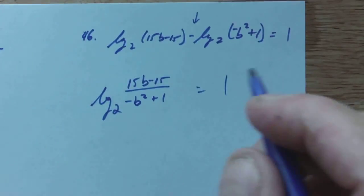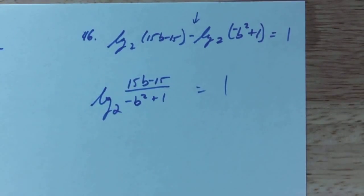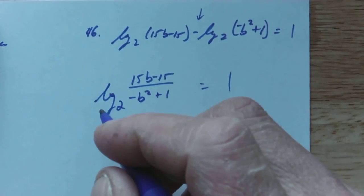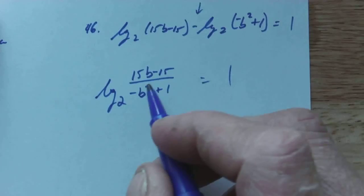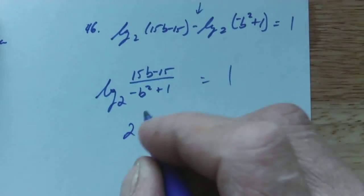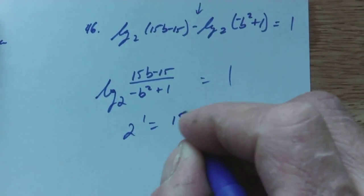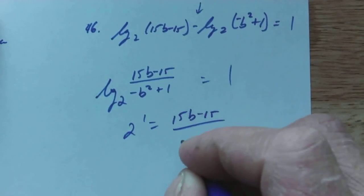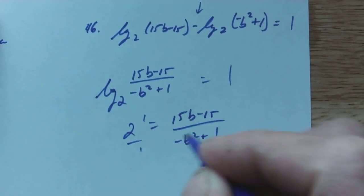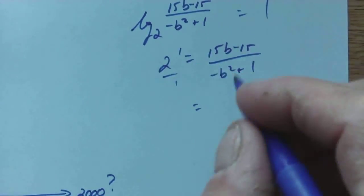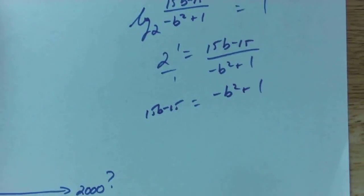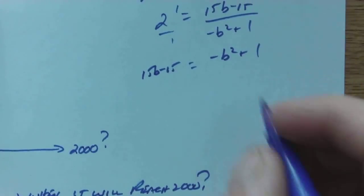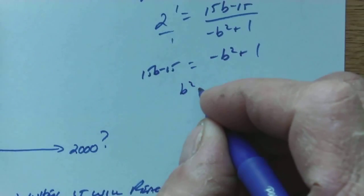So then what we're going to do is we're going to go ahead and say, I've got to shift gears. I've got to peel this log off to get rid of this log and access the b. So I'm going to go 2 raised to the first is equal to 15b minus 15 over negative b squared plus 1. So I have cross-multiply 15b minus 15, negative b squared plus 1. And then we see the dreaded quadratic. We've got to go ahead and get it set equal to 0.